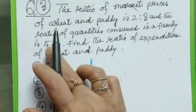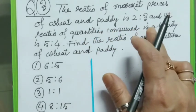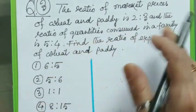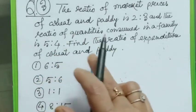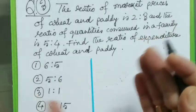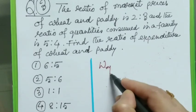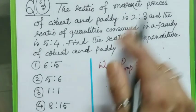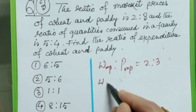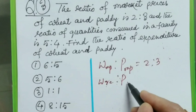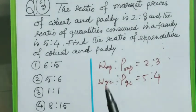Question number 3. The ratio of market prices of wheat and paddy is 2 is to 3. And the ratio of quantities consumed in a family is 5 is to 4. Find the ratio of expenditure of wheat and paddy. What is given here? Market price wheat to paddy is 2 is to 3. And given quantity consumed wheat to paddy is equal to 5 is to 4.